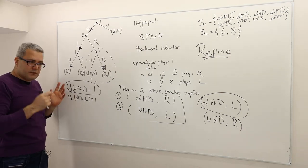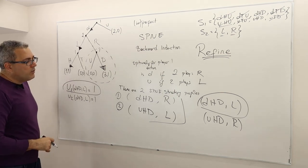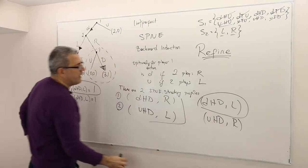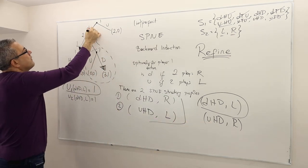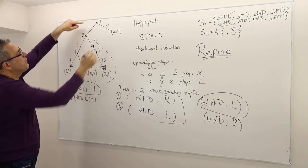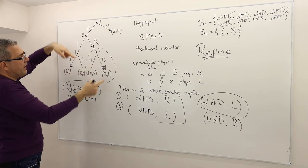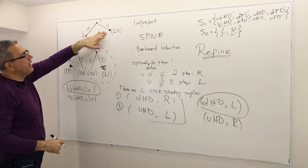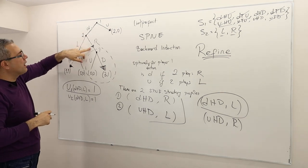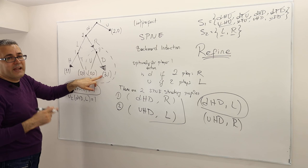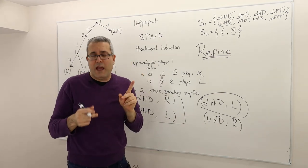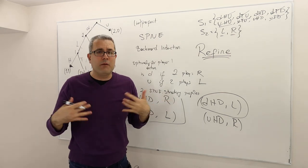By the same logic, consider (UHD, R). Player one plays U, so his payoff is two. But if he knew his opponent was playing R, he would actually go for D and get a higher payoff — so he has regret. Therefore (UHD, R) is not even a Nash equilibrium, and hence cannot be a subgame perfect Nash equilibrium.